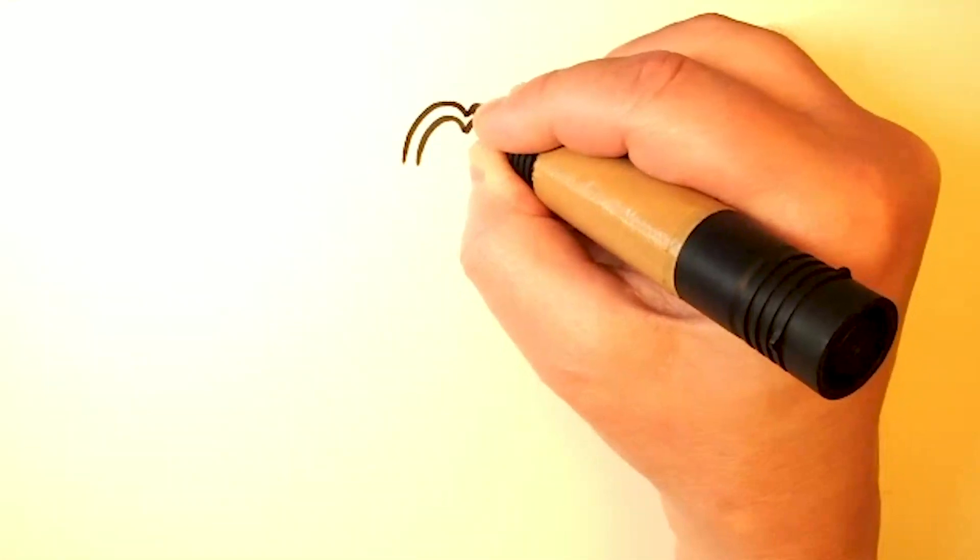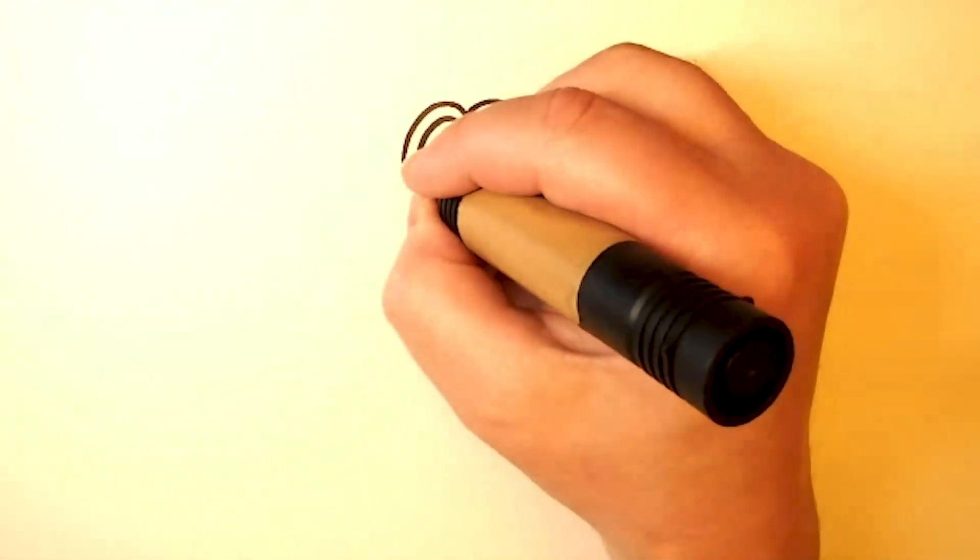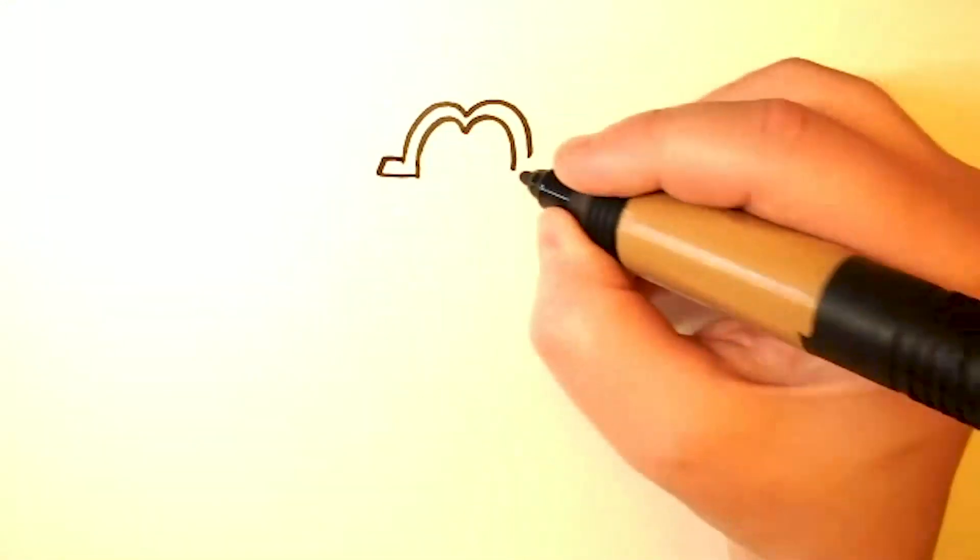Okay, we're going to start by drawing his helmet, which is kind of like drawing the letter M, and then close it off at the sides.